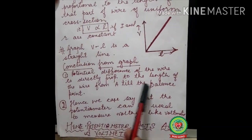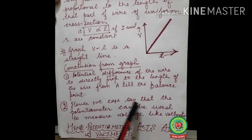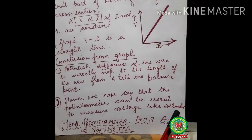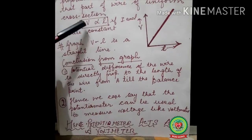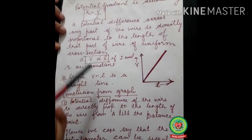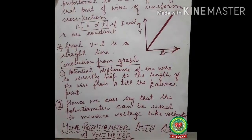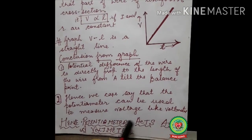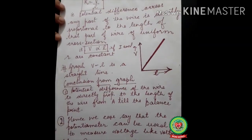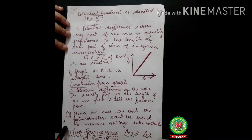The graph tells us that the potential difference of the wire is directly proportional to the length of the wire from A till the balance point. Hence we can say that the potentiometer can be used to measure voltage like a voltmeter. Since we can change the voltage with a change in length, we can find the potential difference indirectly. So a potentiometer acts as a voltmeter.